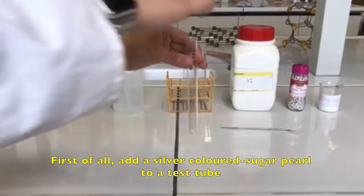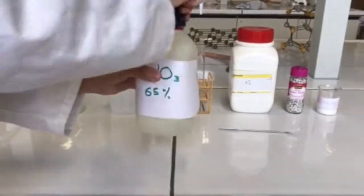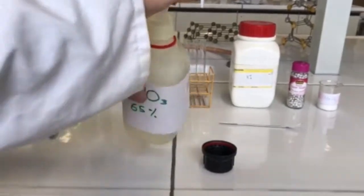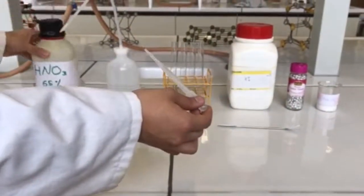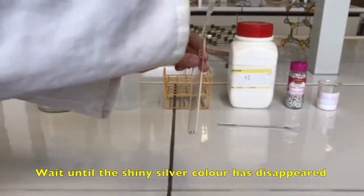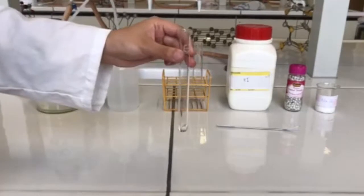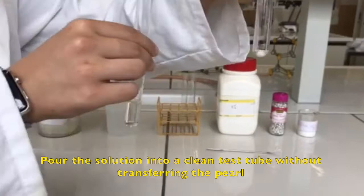First of all, add a silver-colored sugar pearl to a test tube. Then, carefully add a few milliliters of nitric acid. Wait until the shiny silver color has disappeared. Pour the solution into a clean test tube without transferring the pearl.